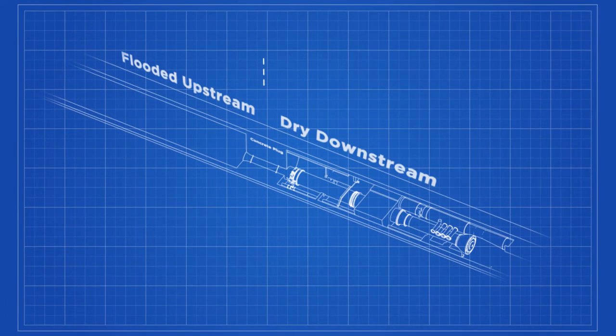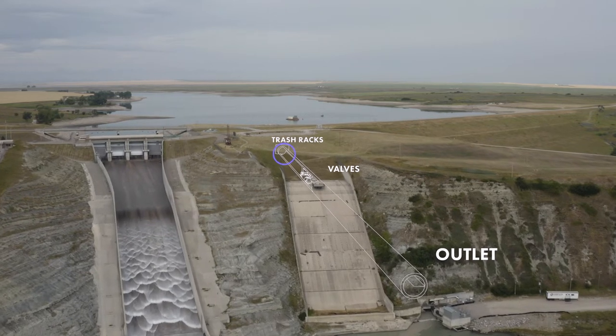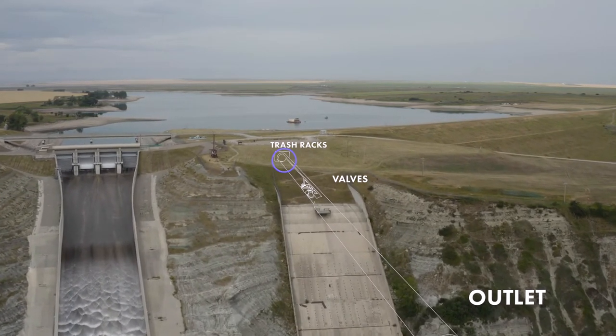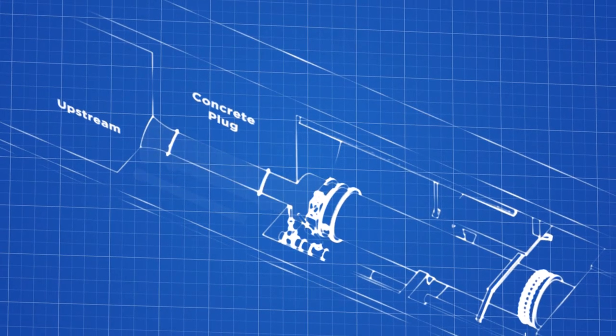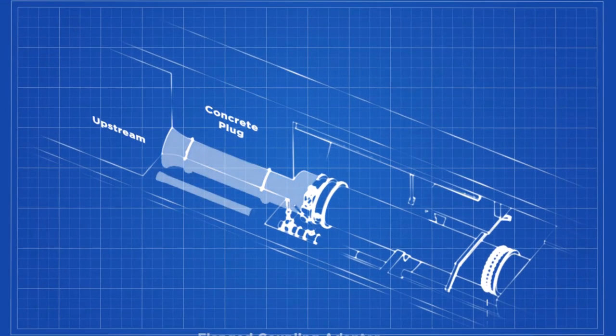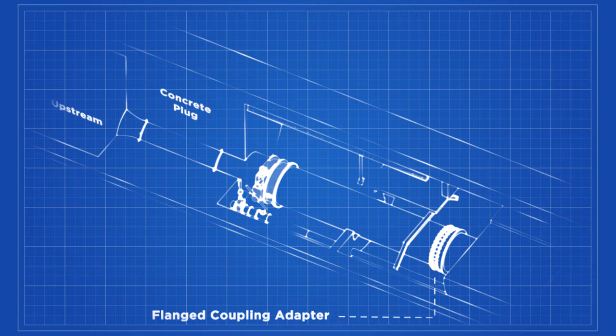Approximately 700 feet downstream of the trash racks, a concrete plug separates the submerged upstream end of the low-level outlet tunnel from the downstream. The concrete plug is 20 feet long and prevents the reservoir draining through the tunnel. Two conduits pass through the concrete plug. Immediately downstream of the concrete plug, there is a guard valve on each of these conduits. These valves are used to stop the flow through the conduits.